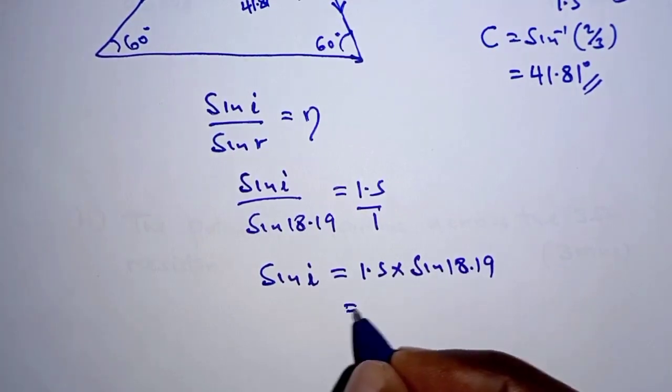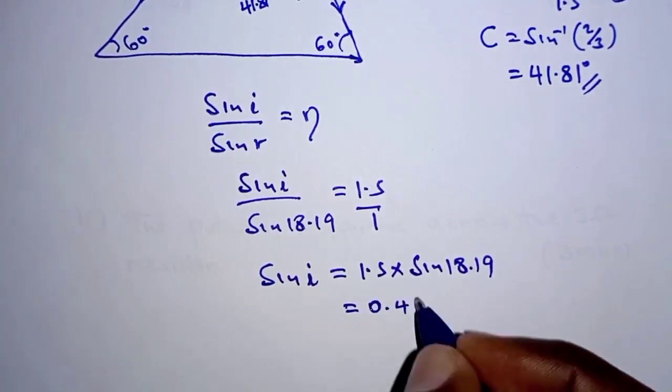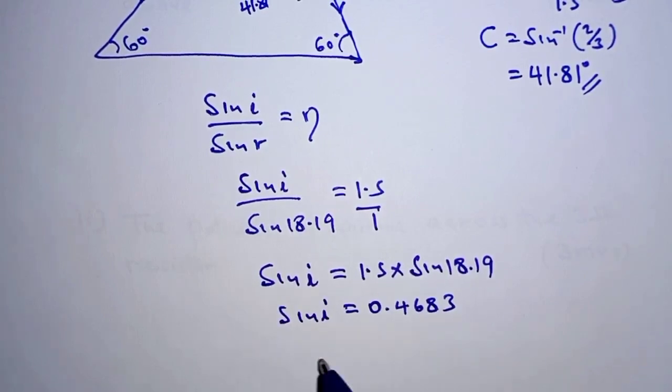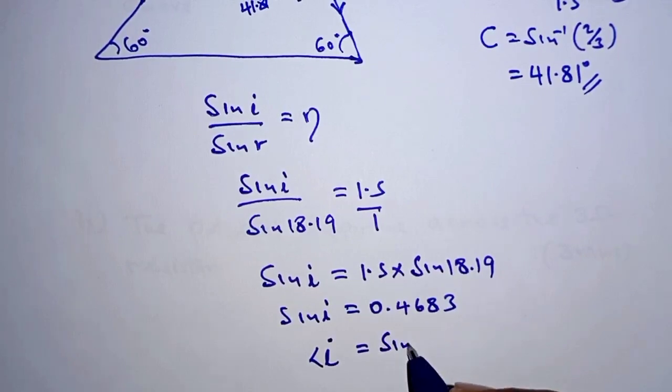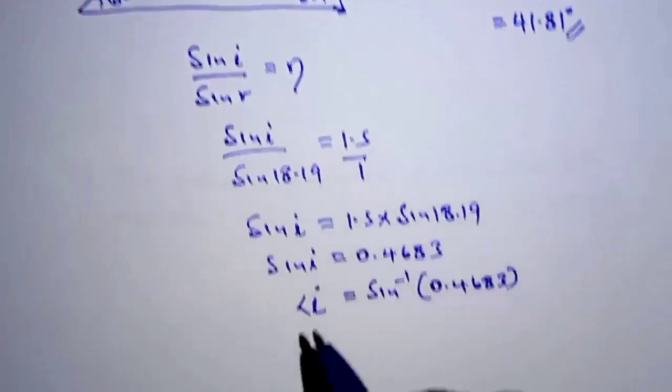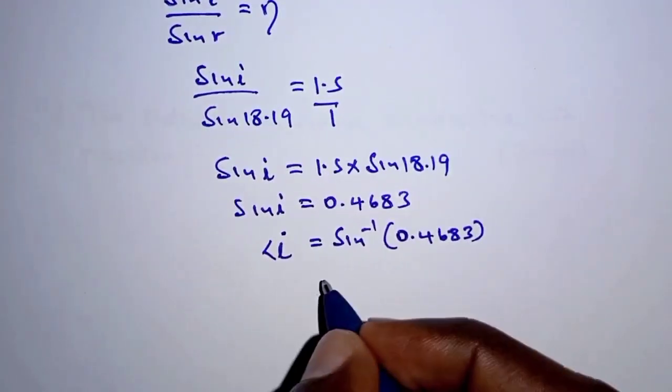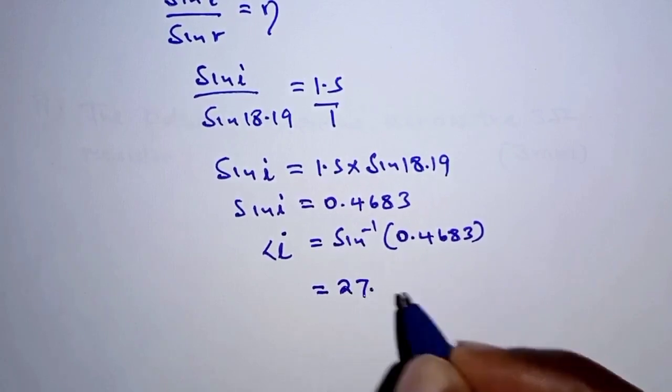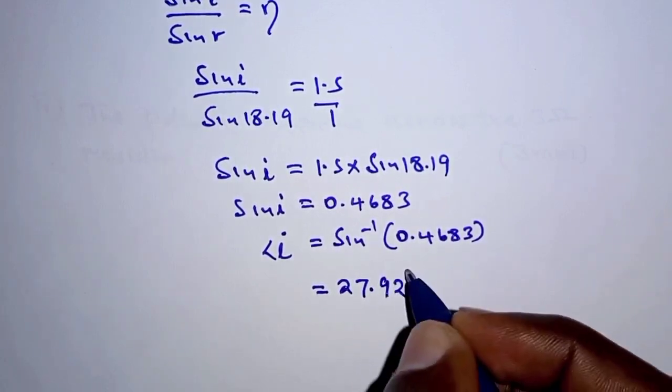Now the right hand side becomes 0.4683. So that is sine of I. And therefore angle I is equal to the sine inverse of this. And therefore finally the angle of incidence on that face becomes 27.92 degrees.